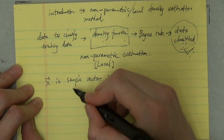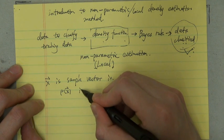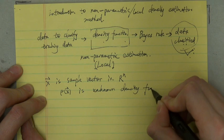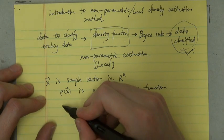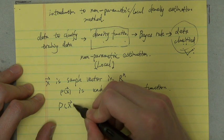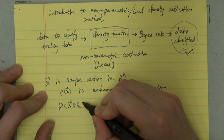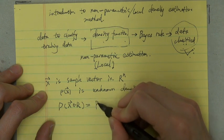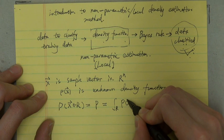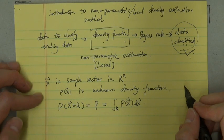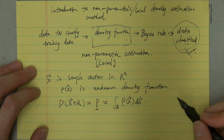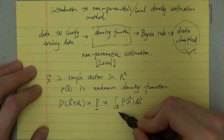And ρ(x⃗) is an unknown density function. So the probability of x belongs to R^n, the region R^n, we use P to represent this probability. It can be written like this, the integral form like this. So we can see P is the average of the density function value in the volume of R^n.